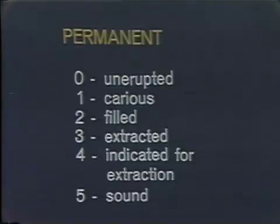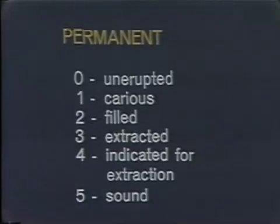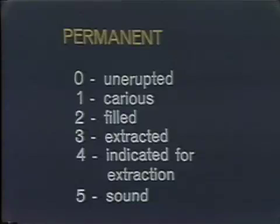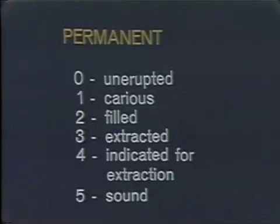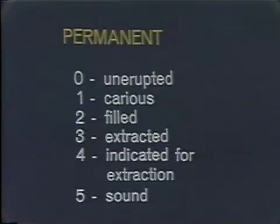The condition of the teeth or tooth spaces are classified into six mutually exclusive categories: unerupted, decayed, filled, extracted, indicated for extraction, and sound teeth. These conditions are given the numerical code zero through five, respectively, for the permanent teeth.